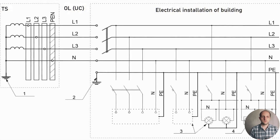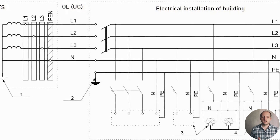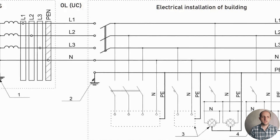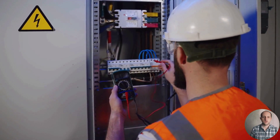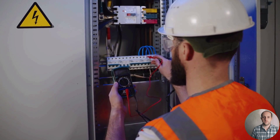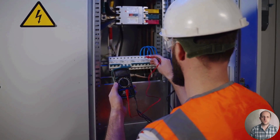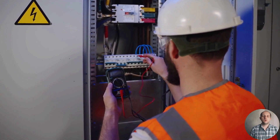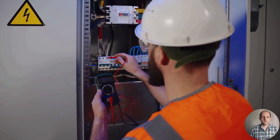When connecting a building's electrical installation to an existing distribution network, it is possible to use the TT type of system earthing, but in some cases it is difficult or impossible. In the TT system, exposed conductive parts of class I electrical equipment are connected to the building's earthing arrangement, whose earth electrode must be electrically independent from the power supply's earth electrode. In urban areas with dense buildings, installing independent earth electrodes is very difficult if not impossible.